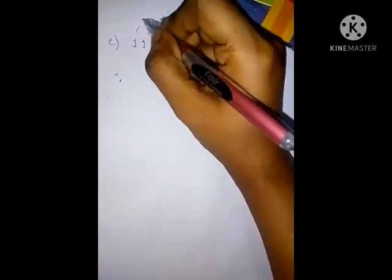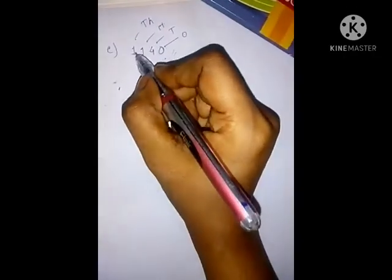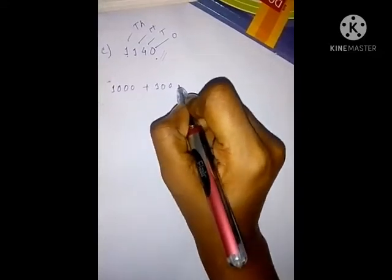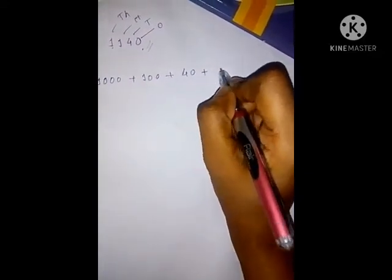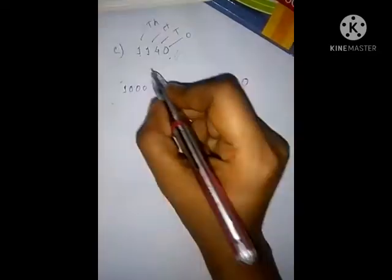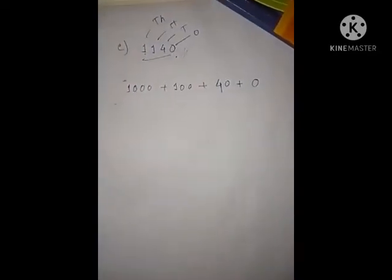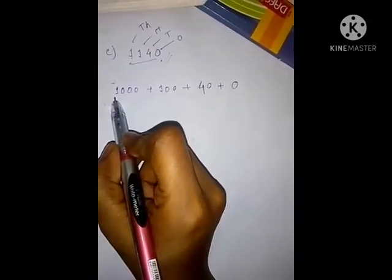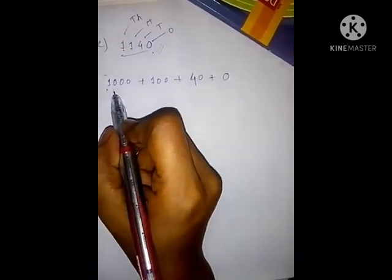Before writing the expanded form, we need to know the place value of each digit: 1, 10, 100, 1000. The expanded form is: 1000 plus 100 plus 40 plus 0. Now we need to find the Roman numeral symbol for each of these values.